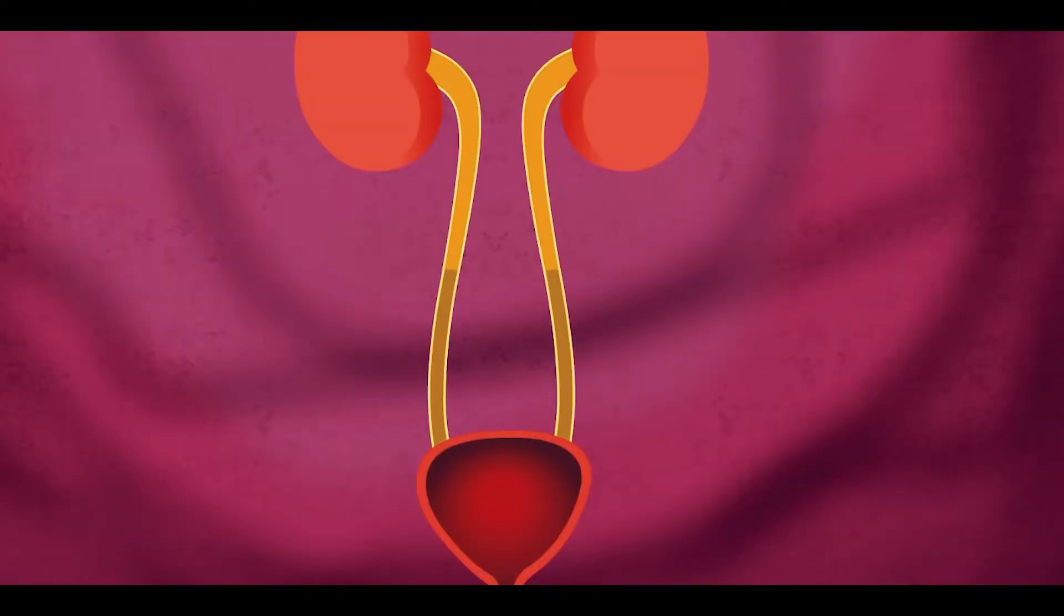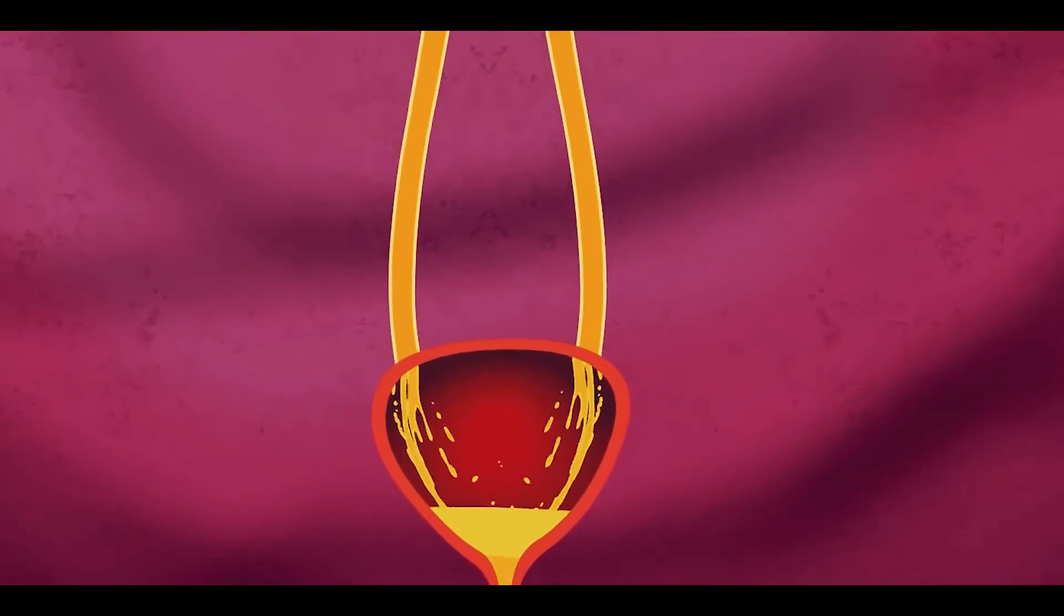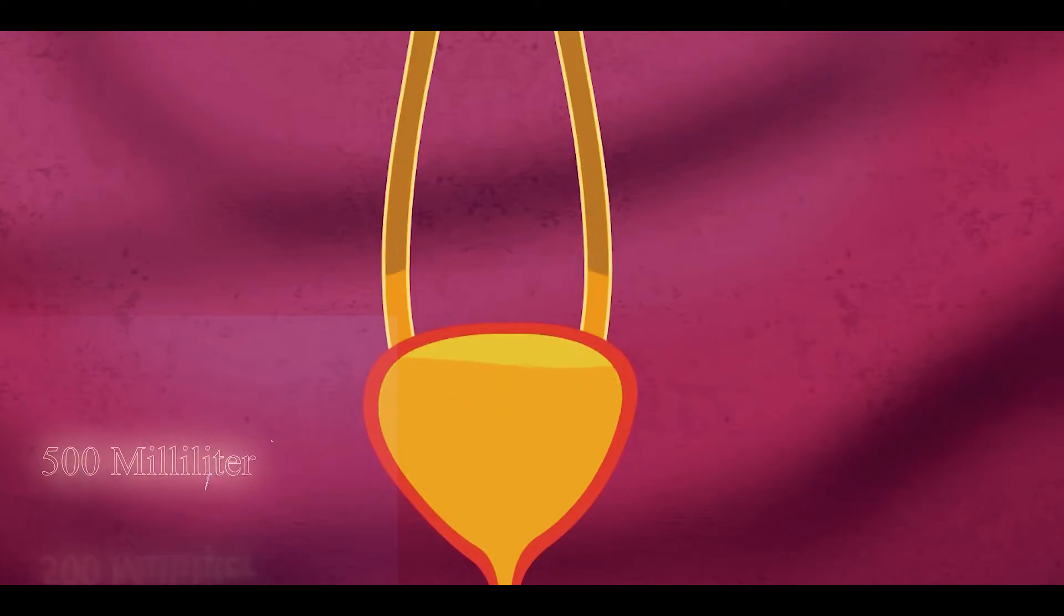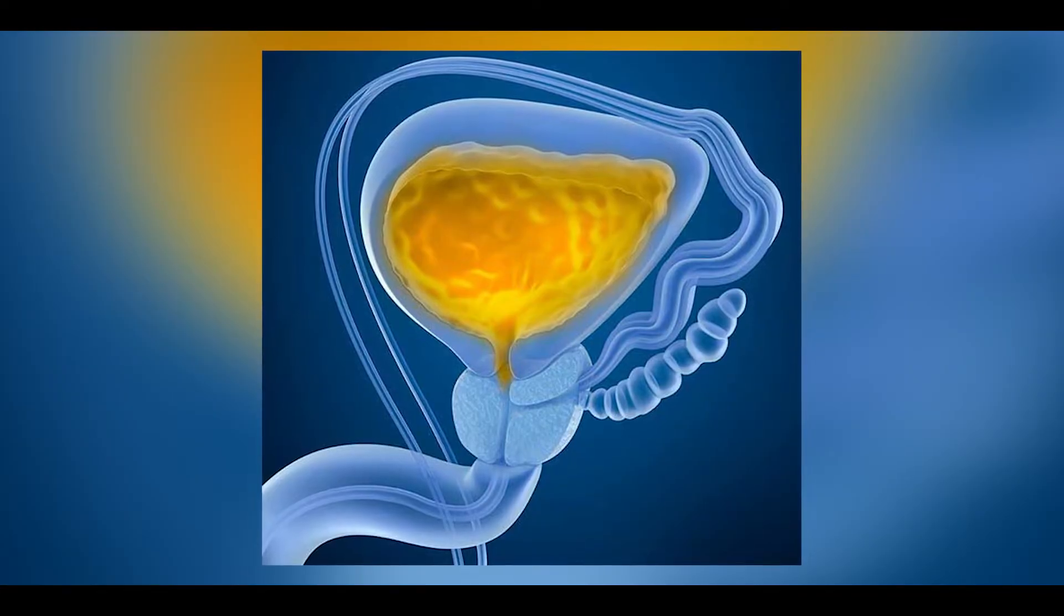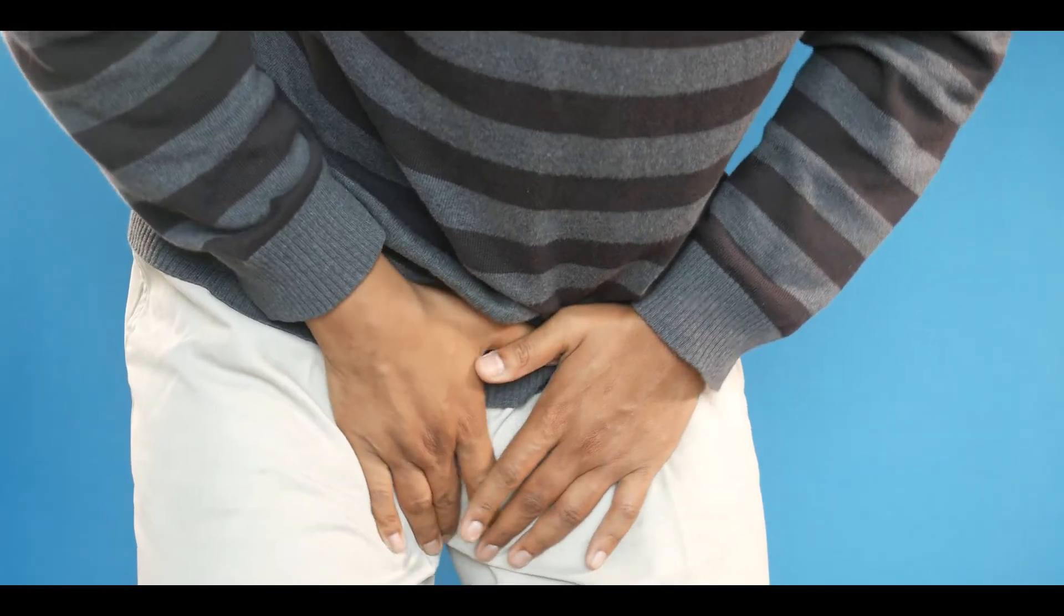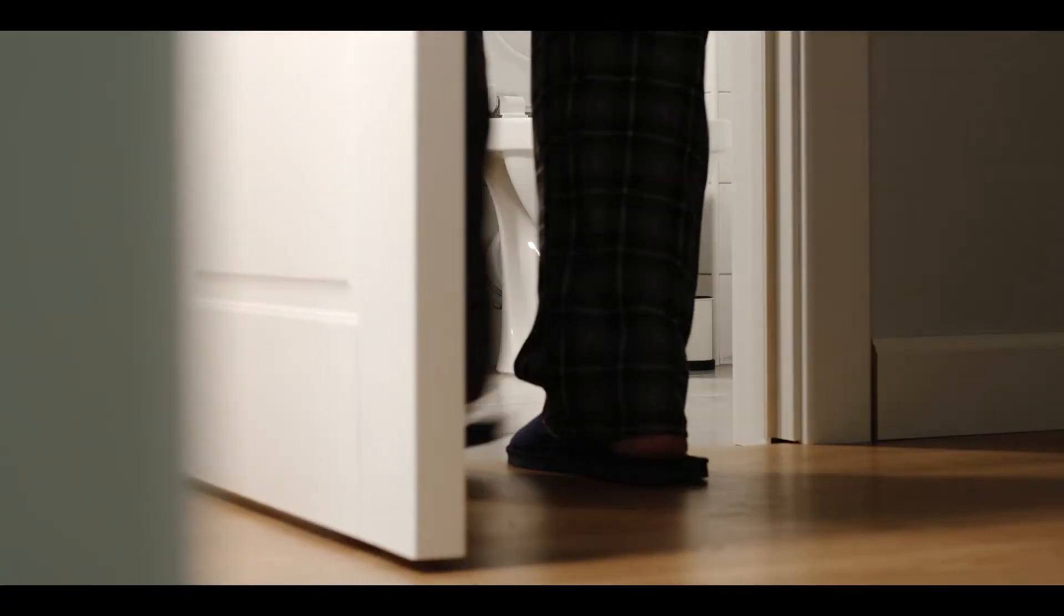In normal humans, the maximum capacity of the urinary bladder to store urine is 500 ml, and if this volume is exceeded, it becomes difficult to hold urine further, requiring urination.